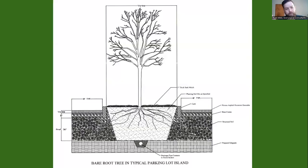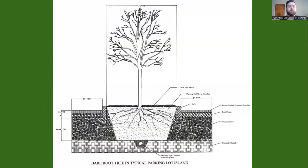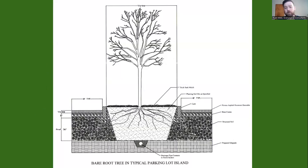Here's an example of one of these technical specs showing a tree inside a typical parking lot island — it shows the drainage, what kind of crushed stone material should be there, how wide the root ball should be compared to the branching structure. A contractor can look at this and get the job done right the first time. It's very important to include these things, especially when multiple people over long periods will be overseeing these projects.